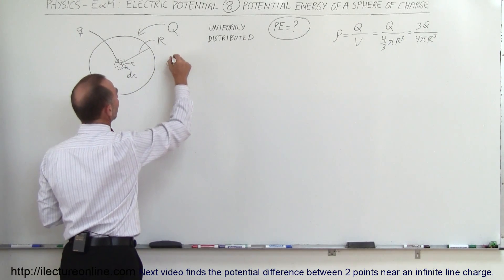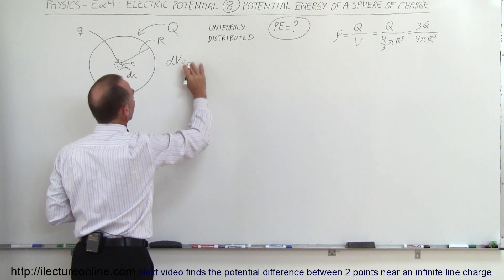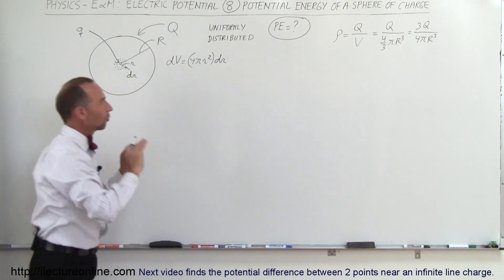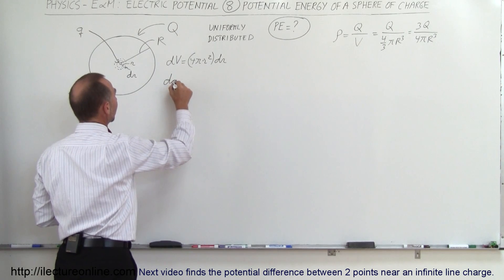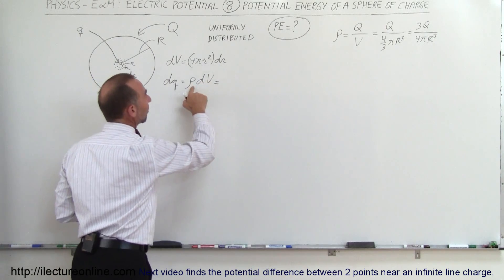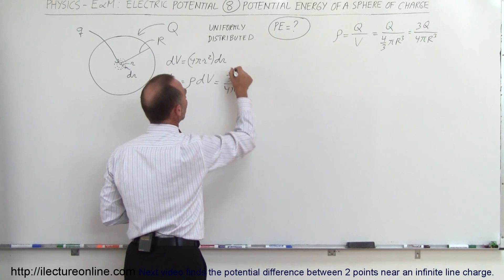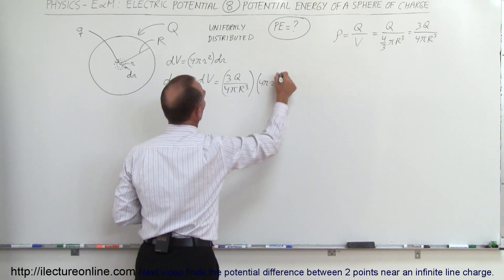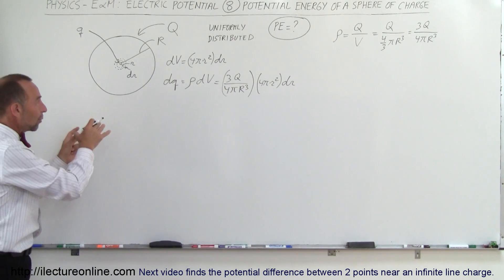The volume of that shell, dV, is equal to the surface area of the shell — 4πr² — times the thickness dr. So dV = 4πr² dr. The amount of charge contained in that shell, dq, is equal to the charge density times the volume dV, which is (3Q / 4πR³) times (4πr² dr).